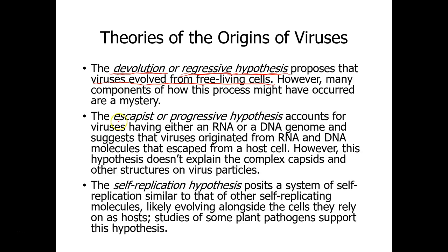Then there is the escapist hypothesis, also known as the progressive hypothesis. It says that viruses originated from RNA and DNA molecules that escaped from a host cell. The last hypothesis is the self-replication hypothesis, which says that viruses likely evolved alongside the cells they rely on as hosts. Studies done with plant pathogens like tobacco mosaic virus support this hypothesis — that the viruses evolved along with their host, similar to co-evolution between bees and flowers.